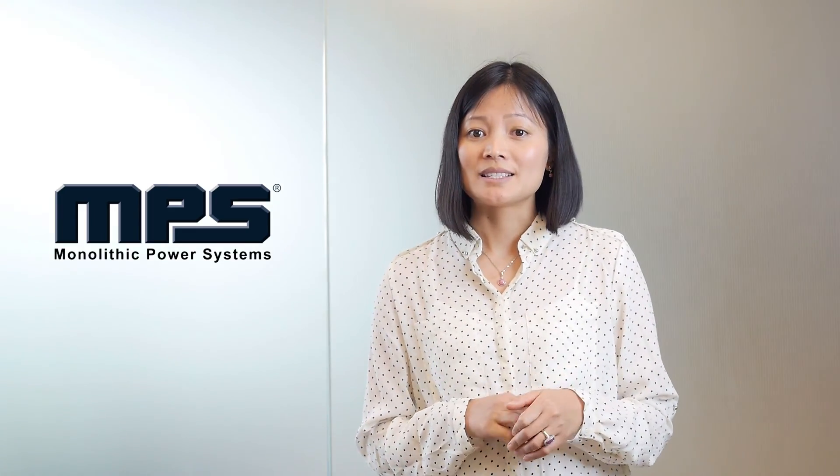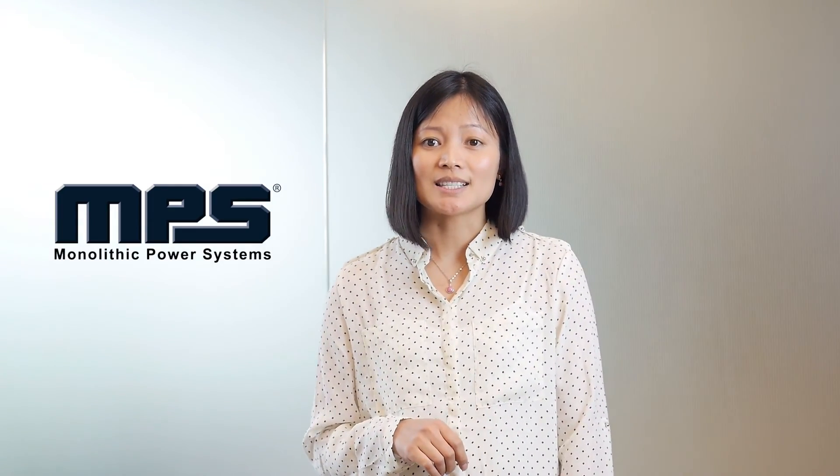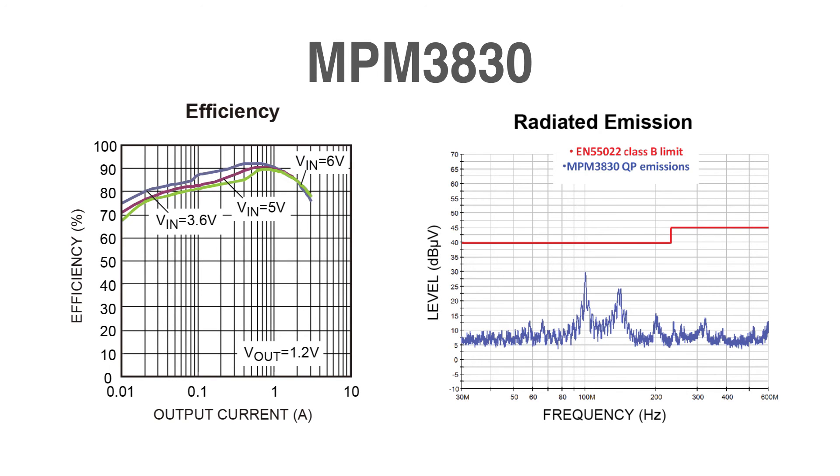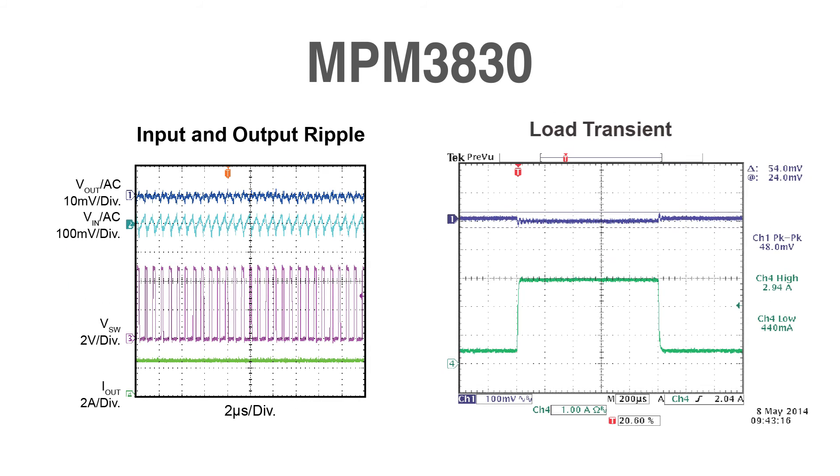When it comes to other important design considerations such as efficiency, EMI, ripple, and transient performance, the MPM 3830 has comparable efficiency and EMI performance but outperformed the competition in terms of ripple and transient performance.